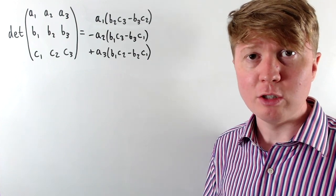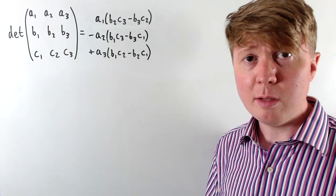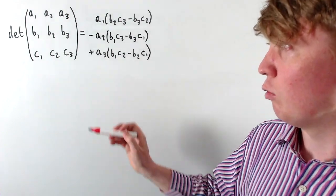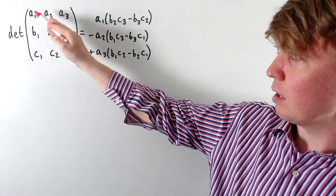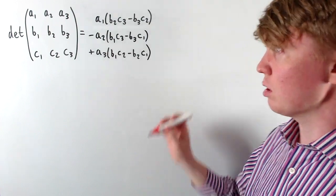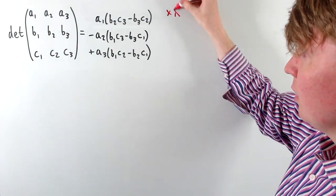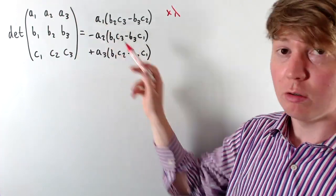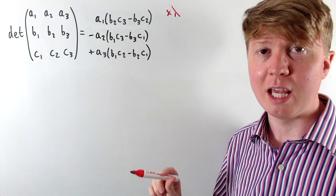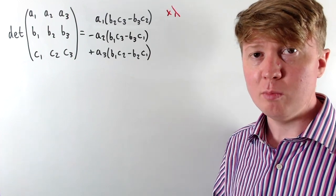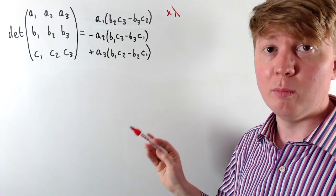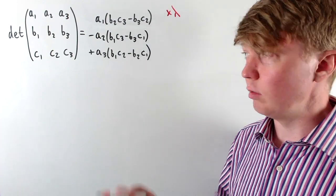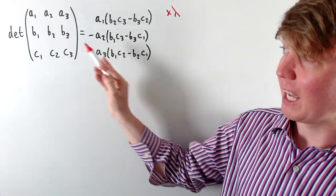The simplest elementary row operation is where you take all of the elements in a row and multiply them by some scalar constant. If we multiply them all by lambda, then when we calculate the determinant expanding along this row, we've just multiplied a1, a2, and a3 by lambda. So multiplying all the elements in a row by a constant multiplies the determinant by that constant.